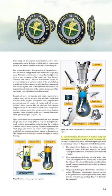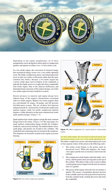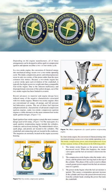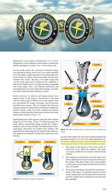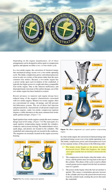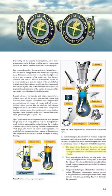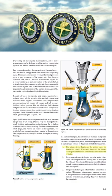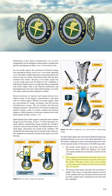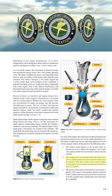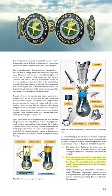In a four-stroke engine, the conversion of chemical energy into mechanical energy occurs over a four-stroke operating cycle. The intake, compression, power, and exhaust processes occur in four separate strokes. The intake stroke begins as the piston starts its downward travel, the intake valve opens, and the fuel-air mixture is drawn into the cylinder. The compression stroke begins when the intake valve closes and the piston starts moving back to the top of the cylinder, obtaining a much greater power output from the fuel-air mixture once ignited.